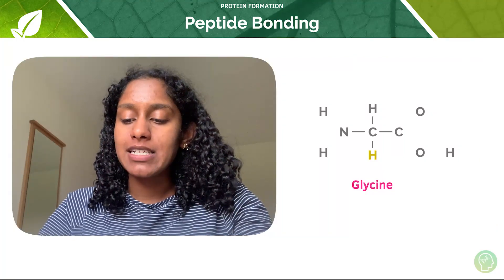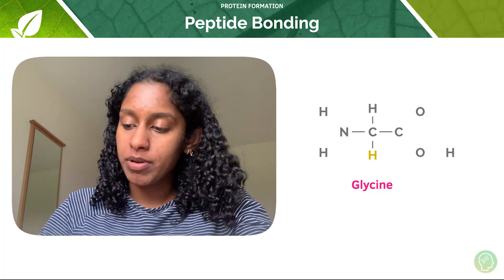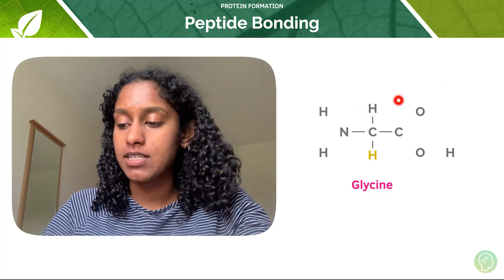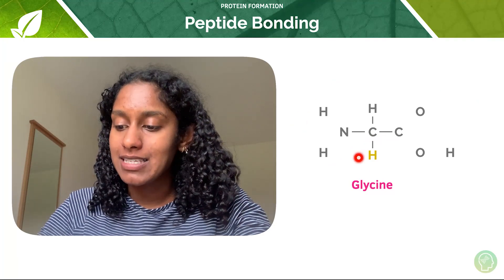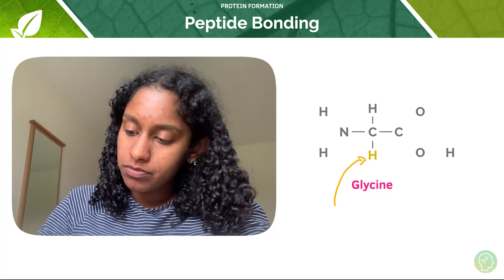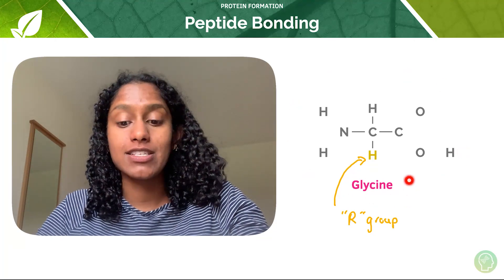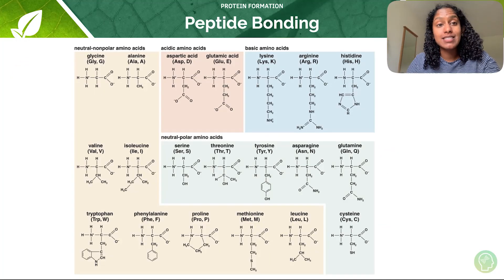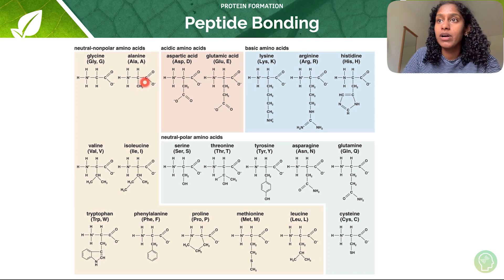The 20 common amino acids differ only in their R group, which we've discussed in the previous tutorial. This is our amino acid: this is our N-terminus or amine group, this is our C-terminus or carboxyl group, this is our hydrogen that's always there — these three things always stay constant — and this is our R group or variable group. The simplest and smallest amino acid is glycine because its R group is just a hydrogen atom. You can see all 20 common amino acids: glycine has a hydrogen variable group, alanine has a CH₃ variable group, and you can see all the varying structures present as the variable group.